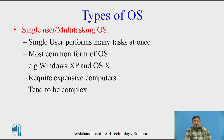Another classification is the single-user, multi-tasking operating system. This operating system is used by a single user who can perform multiple tasks at the same time. This is the most common form of operating system nowadays. Examples are Windows XP and OS X. This type requires expensive, highly configured computers, a large amount of storage space, and is somewhat complex.